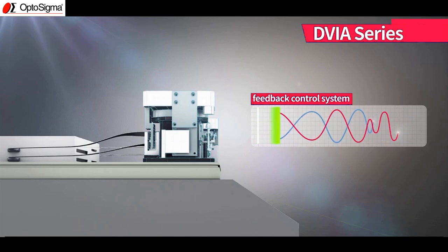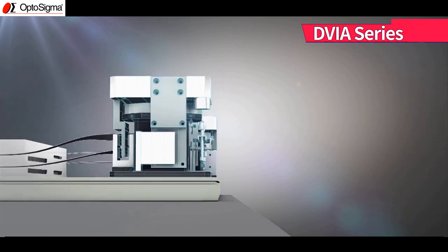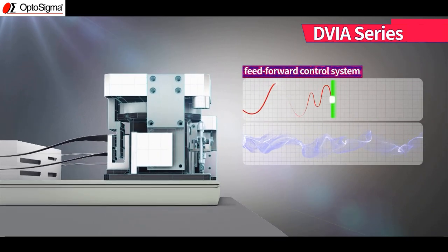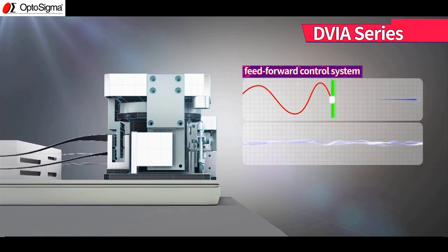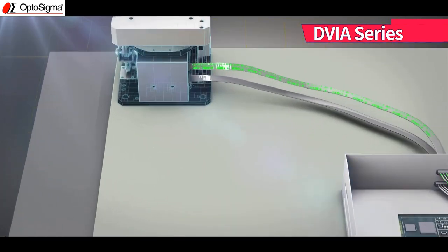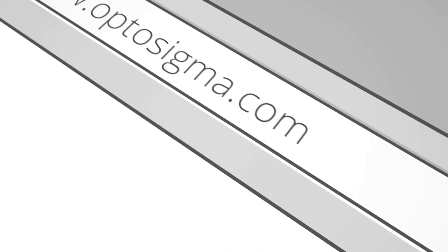Sensors record vibration inputs in all six degrees of freedom, while a digital control unit converts the measured vibration data into digital signals. The controller then sends these signals to the actuators, which cancel out the vibrations by creating an equal and opposite force. If you need more information about optical tables, contact our engineering team to assist you with your project.